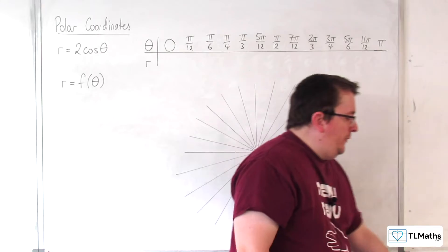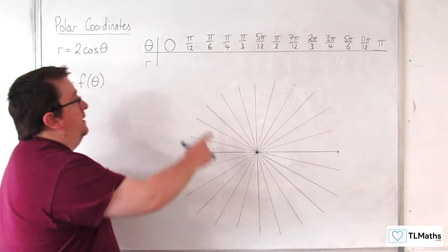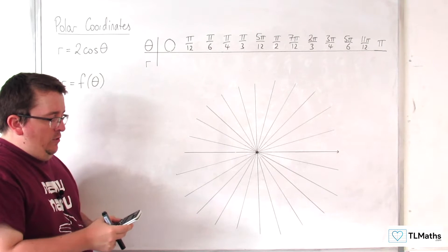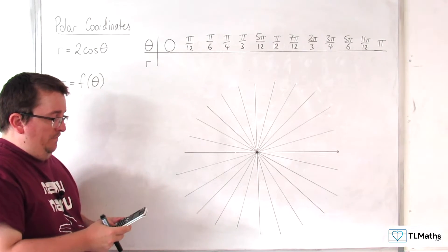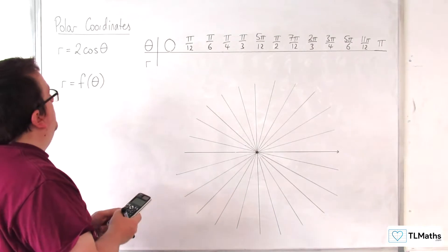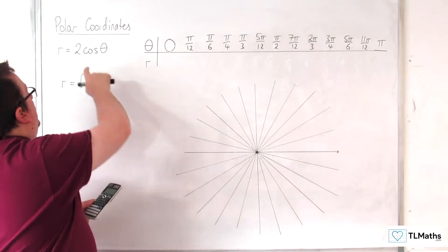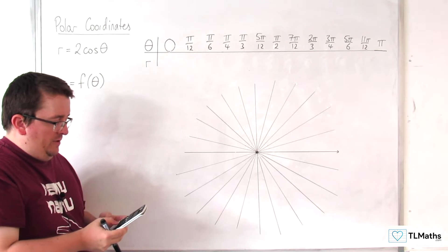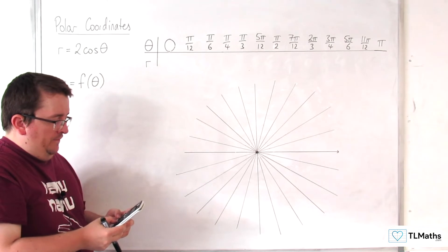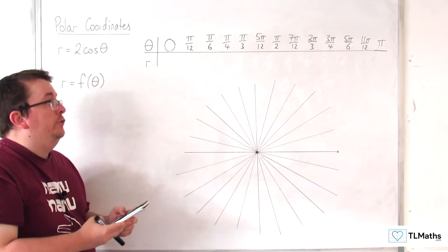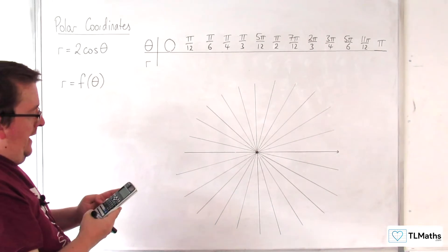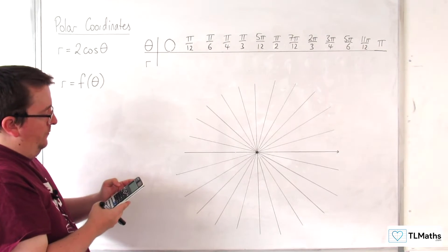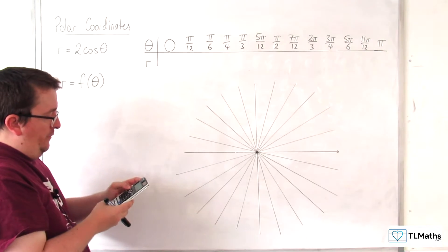So let's start off by using our calculator to create this table. I'm going to go into menu and then to number 9 for table, and I'm just going to type in f of x equals 2 cosine x, making sure you calculate in radians, of course. We want to start at 0 and end at pi, and I'm going to go up in steps of pi over 12.